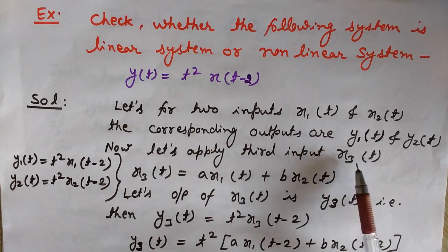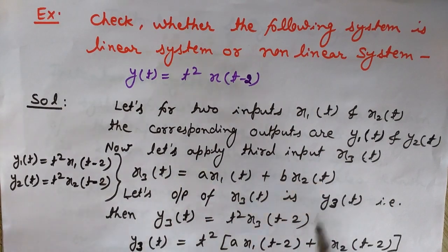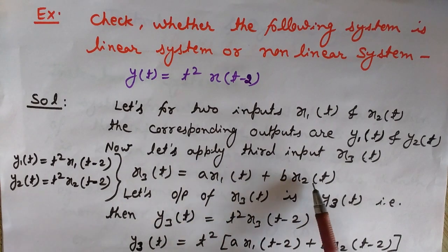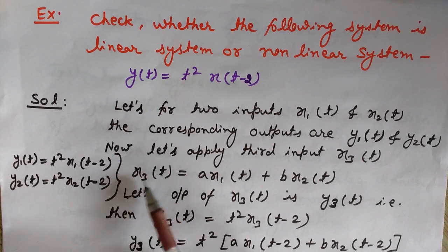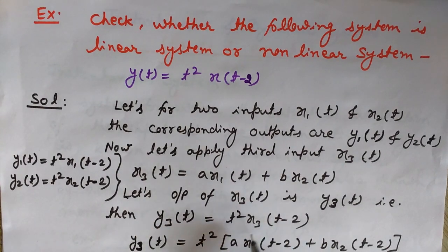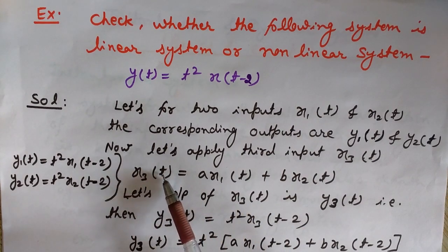Now we will apply a third input x3(t), where x3(t) = ax1(t) + bx2(t). Here we are checking for linearity using both properties — scaling and additivity. x1(t) plus x2(t) represents additivity, and multiplying by a and b shows scaling or homogeneity. So when we apply x3(t), the output will be y3(t). y3(t) = t²·x3(t−2). And x3(t−2) = ax1(t−2) + bx2(t−2).